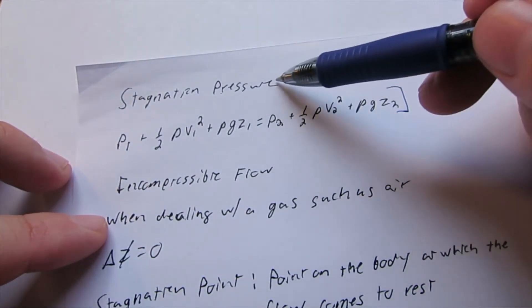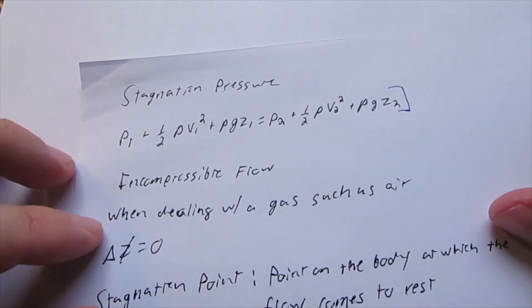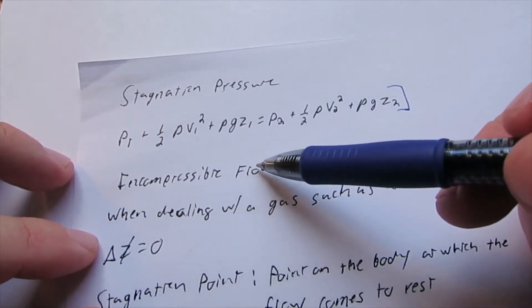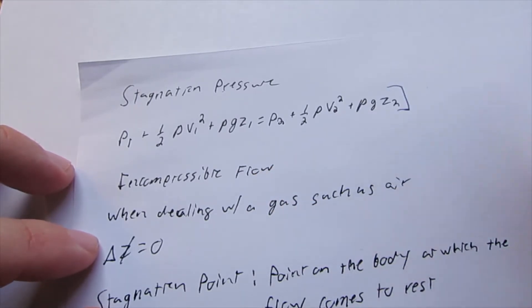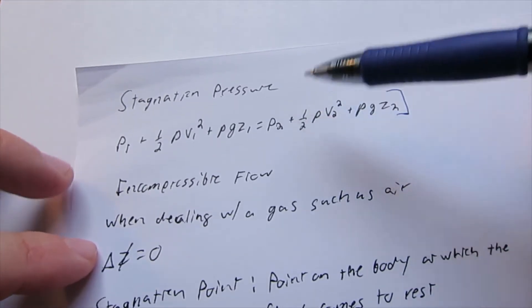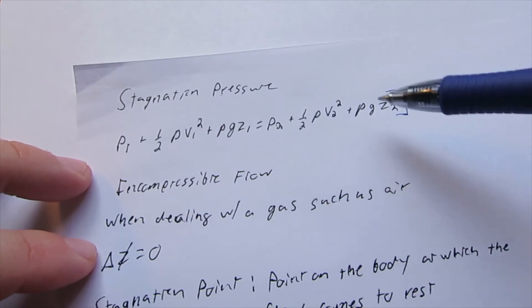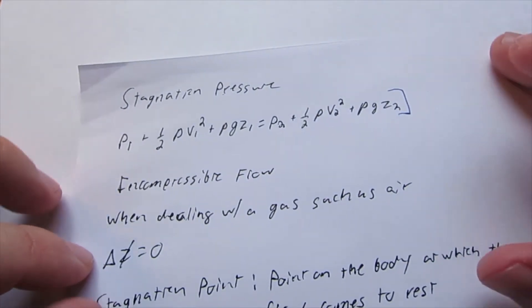The stagnation pressure is a very important thing we can get from using Bernoulli's equation. If we have an incompressible flow and we're dealing with a gas such as air, the difference in elevation can be approximated as zero, so that term can go away.